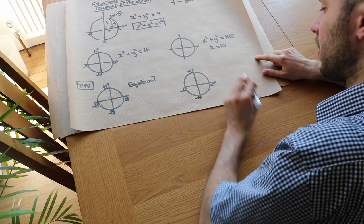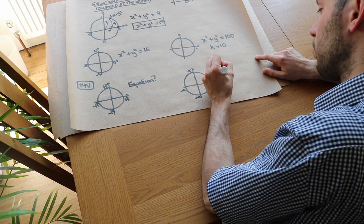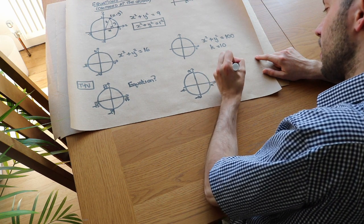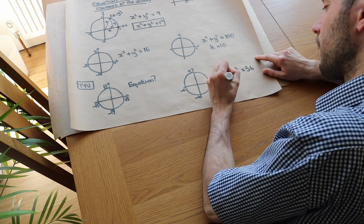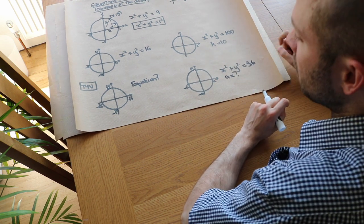If the equation of this circle is x squared plus y squared is equal to 36, then what is a? You may want to pause the video to have a quick go at that.